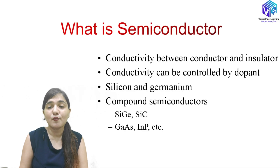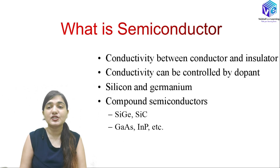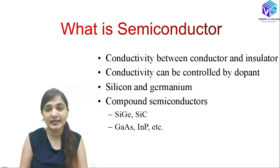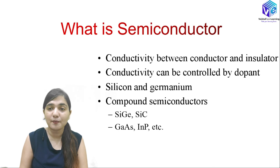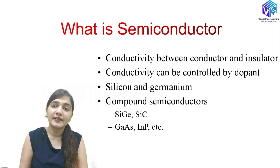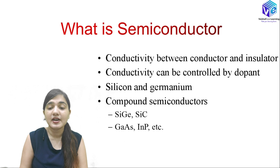First of all, we should know what is a semiconductor. A semiconductor is a material having conductivity in between a conductor and an insulator. The conductivity can be controlled with the help of dopants — increasing or decreasing the amount of dopants increases or decreases the conductivity. Silicon and germanium are examples of semiconductors.